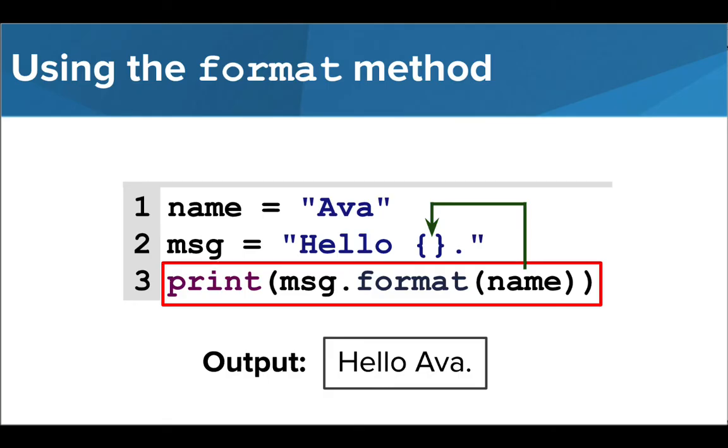We then use the format method to combine the general message and the information we want to include. Remember, when we use methods, we use dot notation. So to use the format method, we first write the name of the message we want to format, then we call the method using dot format, and inside parentheses, we enter the variable name we want to include inside the message. The output of this program would then be, hello Ava.